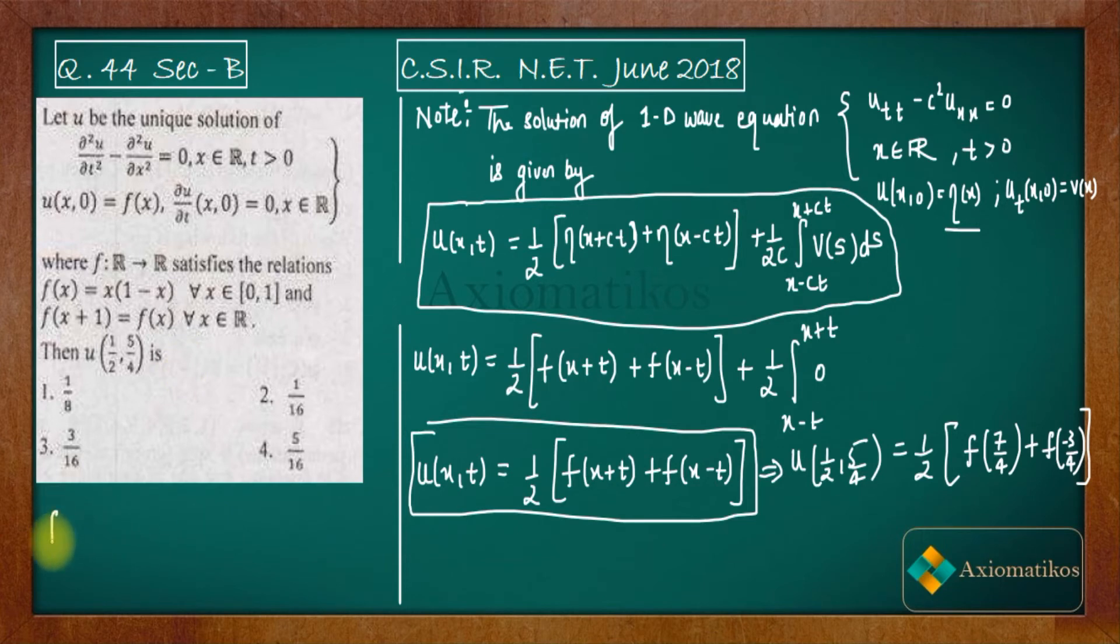Now this implies that f of minus 3/4 is same as f of minus 3/4 plus 1 using this thing. So f of minus 3/4 is equal to f of minus 3/4 plus 1, so it is f of 1/4.